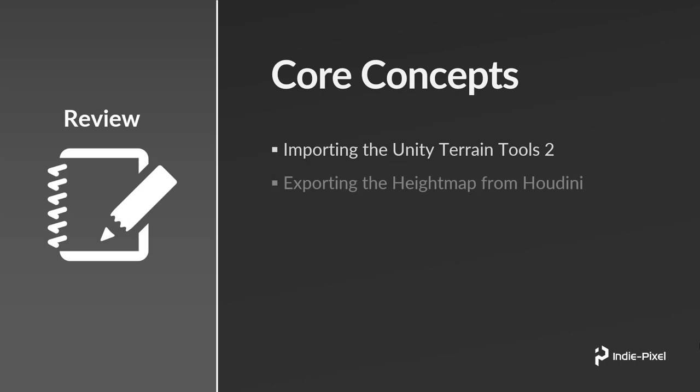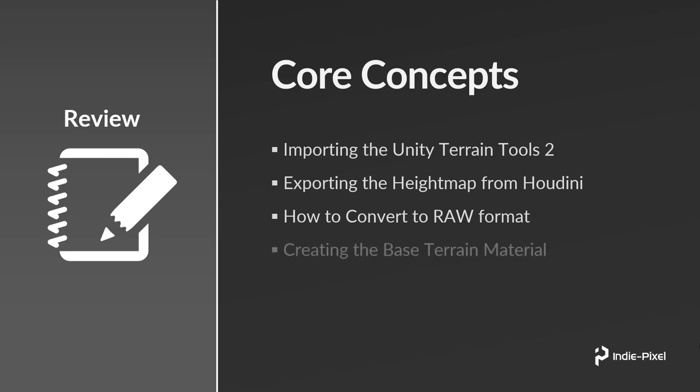Then we're going to learn how to export a height map from Houdini, and then look at how we convert that exported height map to a RAW format so we can import it into Unity. Unity requires that we import it as a RAW format, which I wish they would actually change, but that's just me. Finally, we're going to take a look at creating the base terrain material.